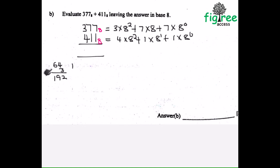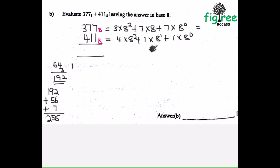Calculating the first number: 64 times 3. 4 times 3 is 12, carry 1, 6 times 3 is 18 plus 1 is 19 — so 192. Then adding 7 times 8 which is 56, plus 7 times 8 to the power 0 which is 7. So 192 plus 56 plus 7 gives me 255.